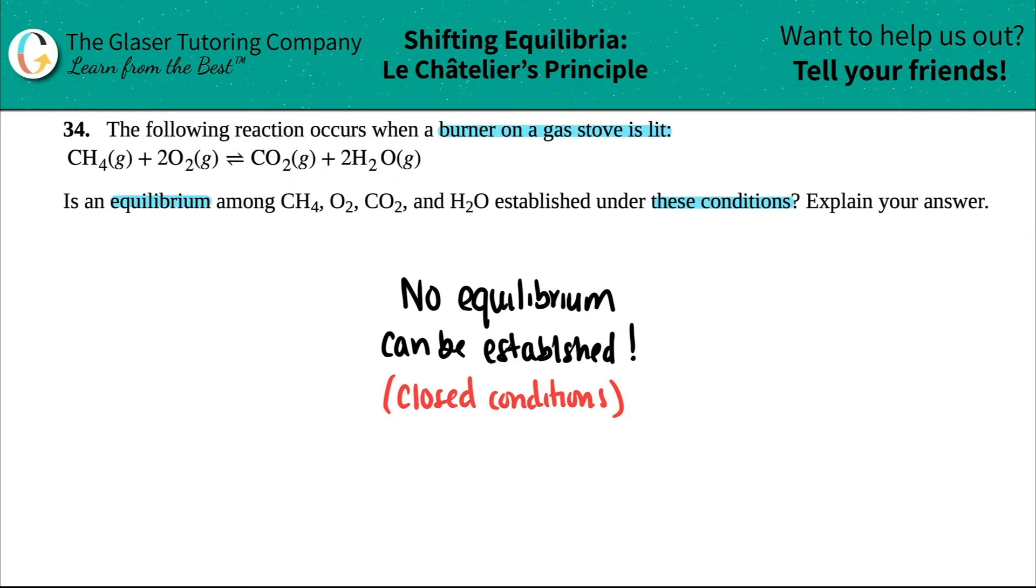Explain because this situation, just like it said, there was a burner on a gas stove is lit. You're not containing these four things. You just light the gas stove and it's able to come in contact with the external environment.